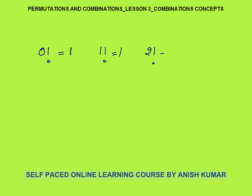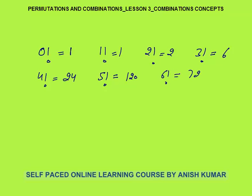2 factorial is 2. 3 factorial is 3 into 2 into 1, which is 6. 4 factorial is 24. 5 factorial is 5 into 4 into 3 into 2 into 1, which is 120. 6 factorial is 720, and 7 factorial is 5040. You must know 0 factorial up to 7 factorial by heart.